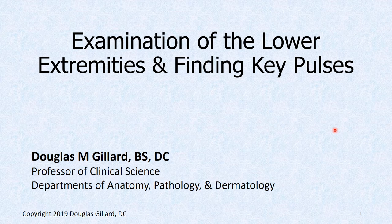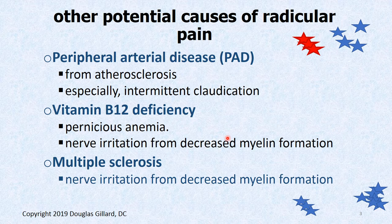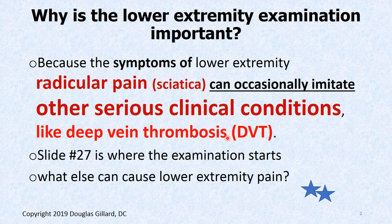Why is the lower extremity exam important? Well, sciatica can mimic — or other conditions can mimic sciatica and completely fake you out, like deep vein thrombosis, notorious for faking people out. I can testify to that, first-hand knowledge. So let's go through it. There are other causes of radicular pain besides sciatica. DVT, deep vein thrombosis, is a big one, a dangerous one.